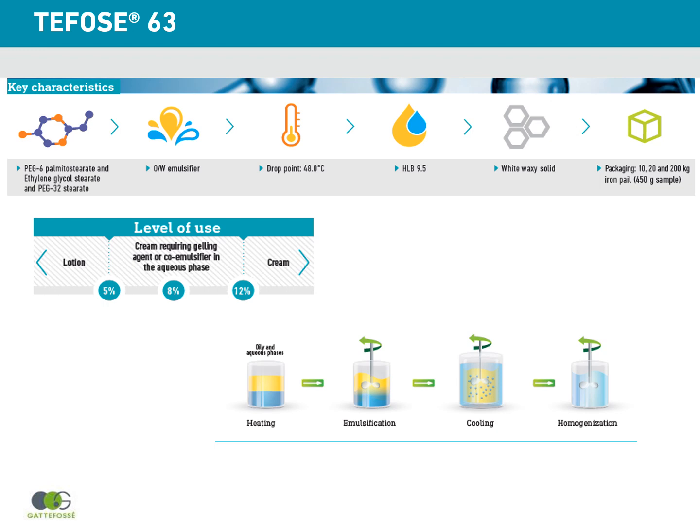Regarding formulation, TEFO63 is able to build different viscosities depending on how much emulsifier you use. Below 5%, it makes a lotion. Above 5%, it makes creams. Between 5 and 12%, you get higher viscosity, but sometimes it requires a gelling agent. Above 12%, it makes a rich cream with high viscosity.